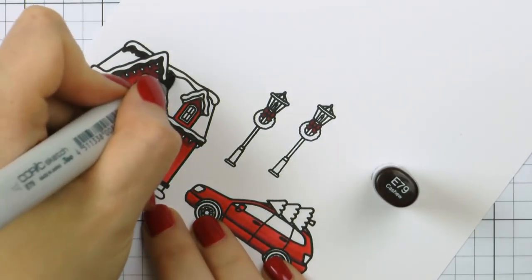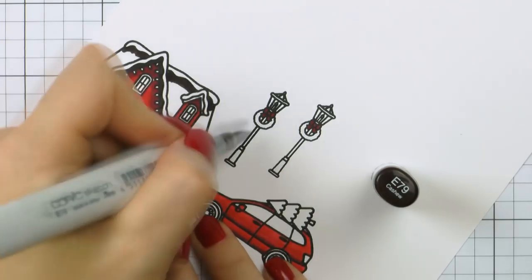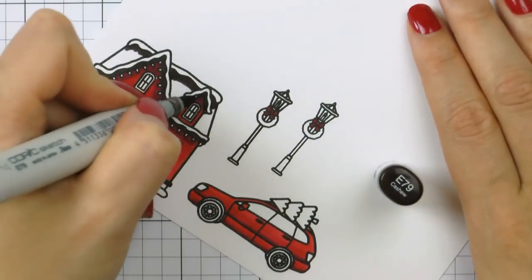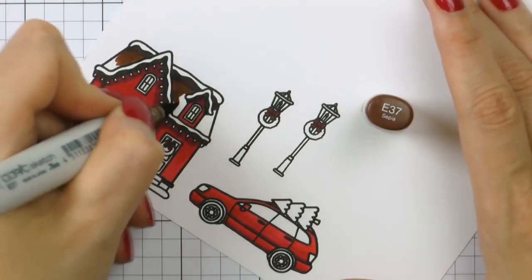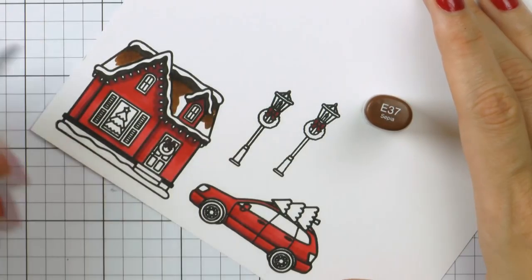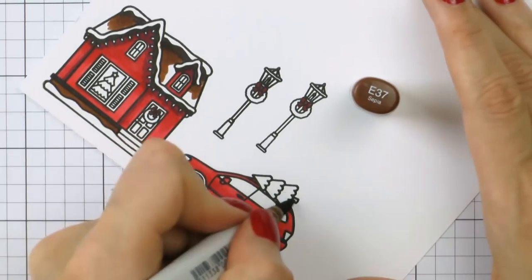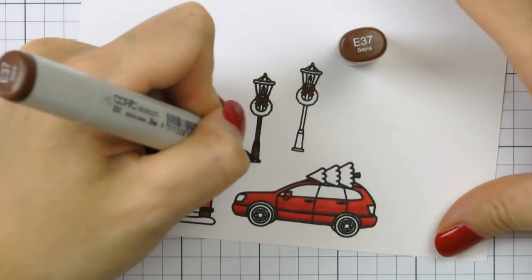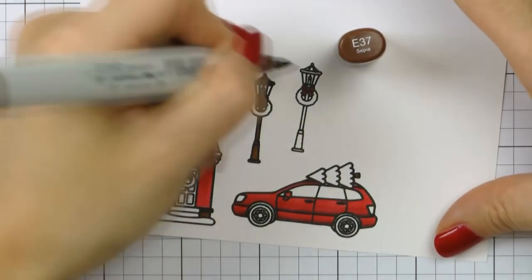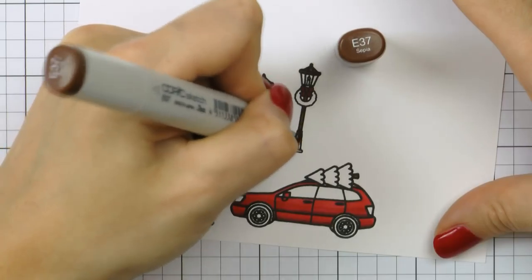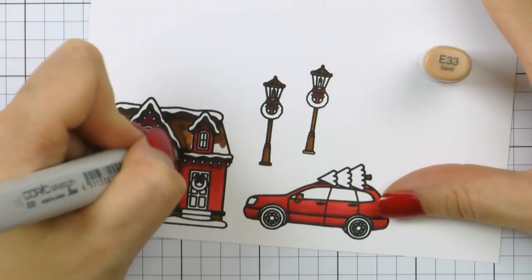Next I used brown markers and colored the roof of my house, the trunk of the tree, and the lampposts. I'm making them look as if they are made out of wood, hence the brown coloring here. You'll notice I didn't color the tires of my car. I didn't want to add black there so I just left them as is.